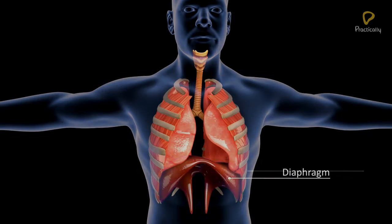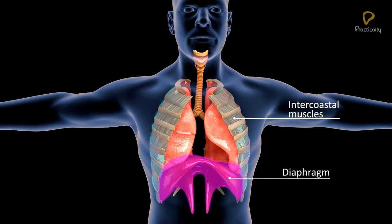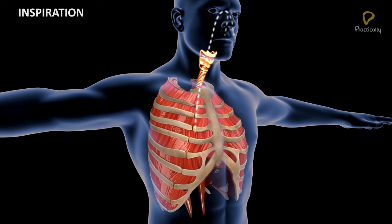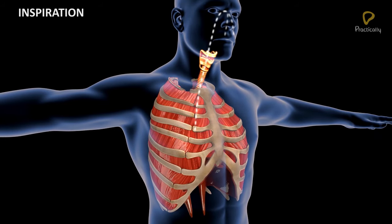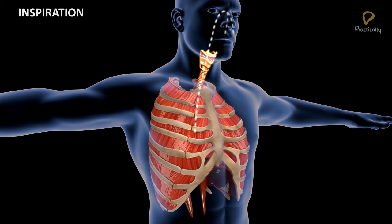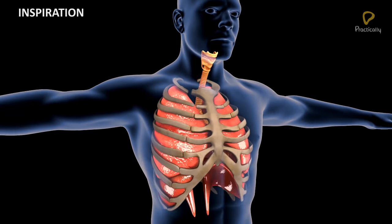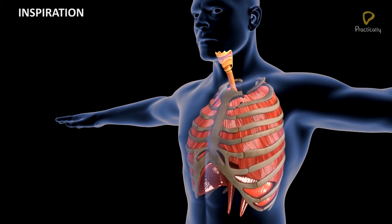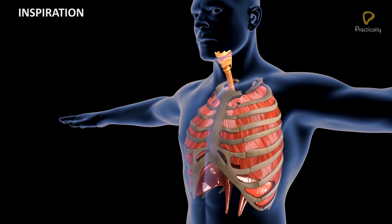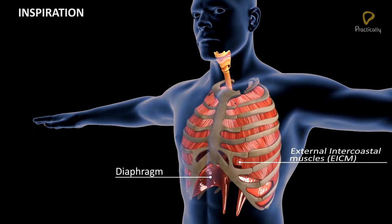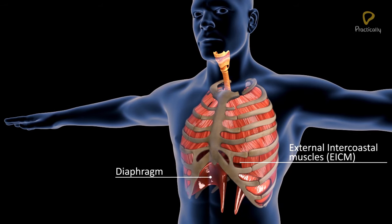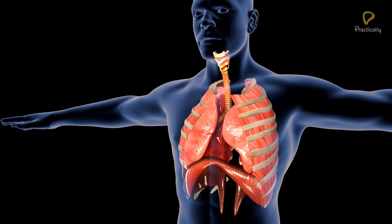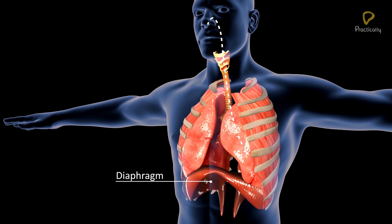Breathing involves the diaphragm and the intercostal muscles. Inspiration — the taking of atmospheric air into the lungs — is an active process, as it takes place by the contraction of the muscles of the diaphragm and the external intercostal muscles. This leads to an increase in the thoracic volume, and air from the outside is sucked into the lungs.